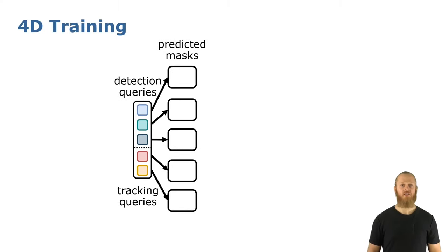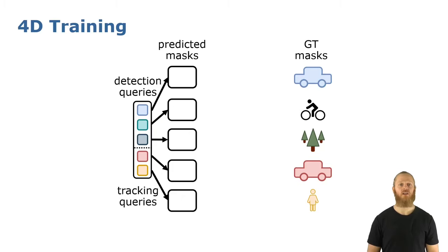In the next scans, we are tracking instances that we segmented before. So we have both sets of detection and tracking queries. And we want to also here maximize the similarity between the tracking queries and the instances they are tracking. For example, again, the red query that is tracking the red car.